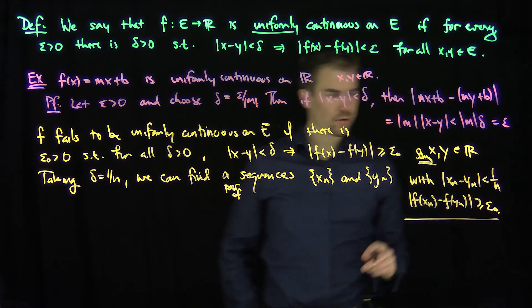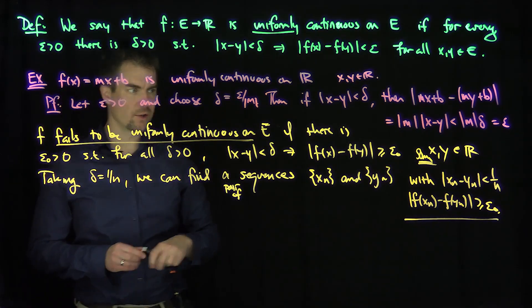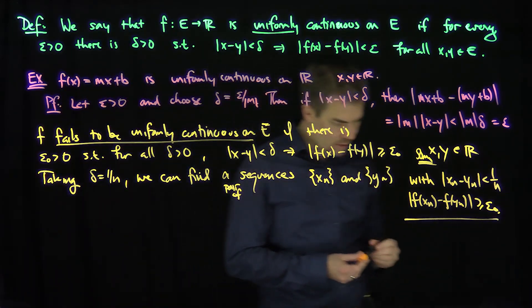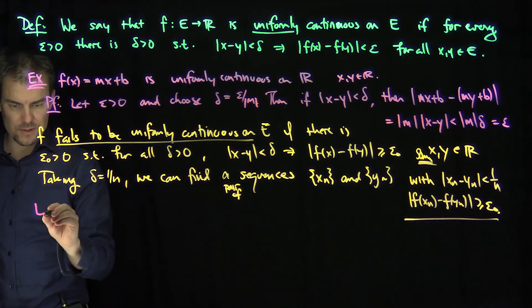So if we can show this condition is true, then that would be an example of a function that fails to be uniformly continuous on E. So now what we're going to do is provide an example of this.